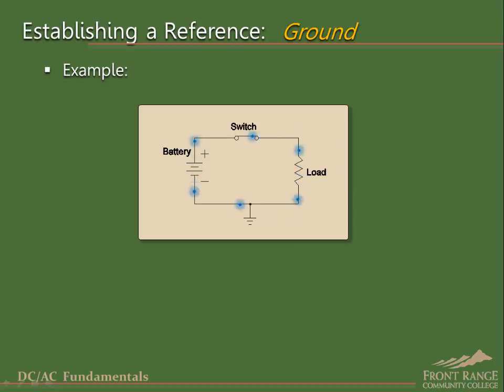Since our choice of reference point was arbitrary, we could have just as well chosen this point as our reference. Or even this point. The electrons continue to move from negative polarity to positive polarity through the closed circuit and are unaffected by our choice of reference point.